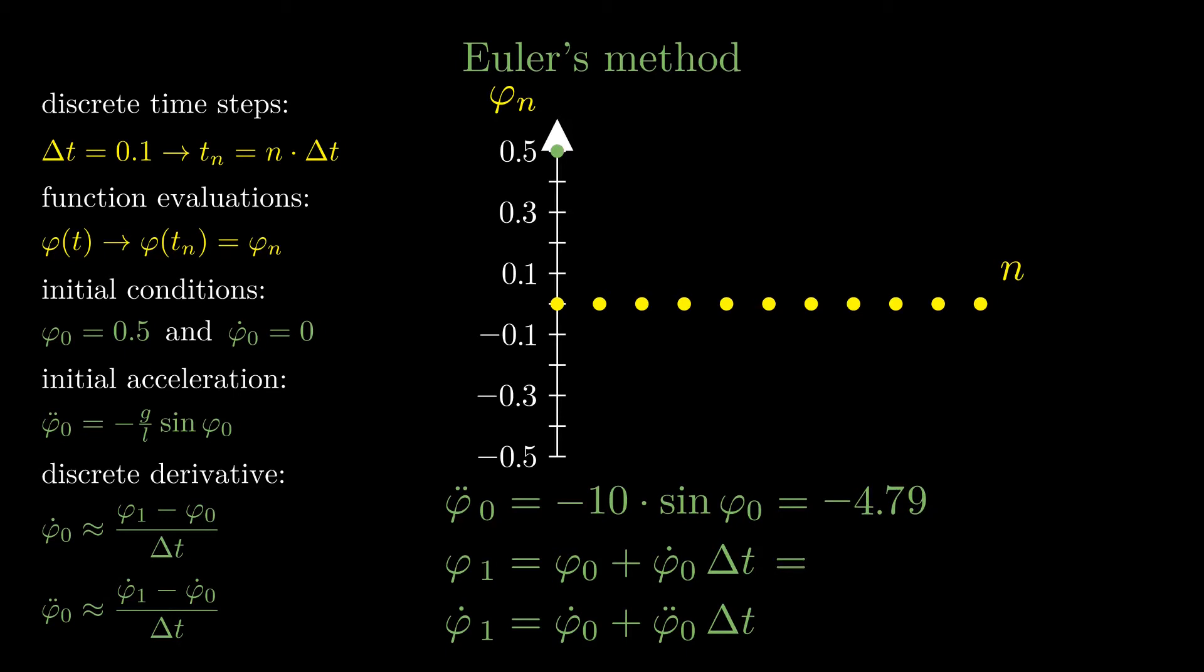When the angle, the angular velocity and the acceleration are known at the given point in time, all three quantities can be determined for the next point in time. This can be iterated to calculate the motion for an arbitrary length and time.